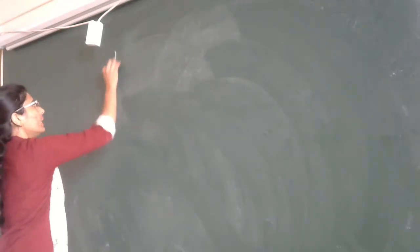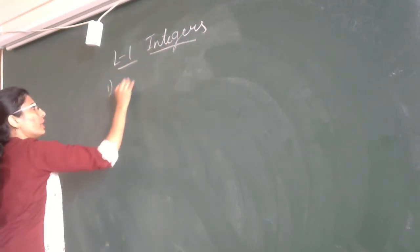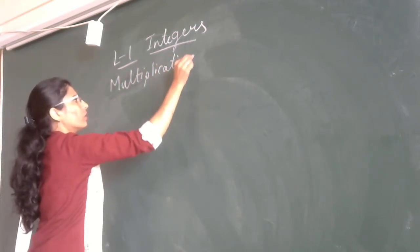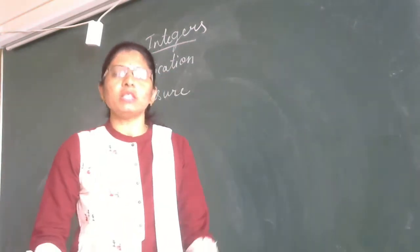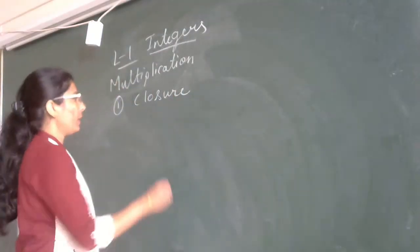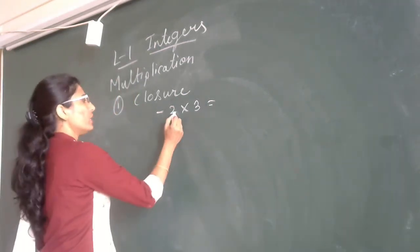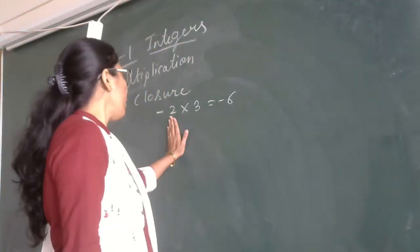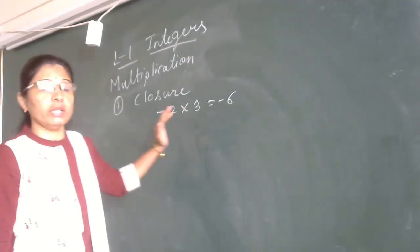In the properties of multiplication of integers, the first property is closure property. That means when you multiply any two integers, you will get the result as an integer only. For example, minus 2 into 3 — one is a positive integer, one is a negative integer — gives minus 6. So when you multiply any two integers, you will get an integer result only. This is the first property, that is closure property.